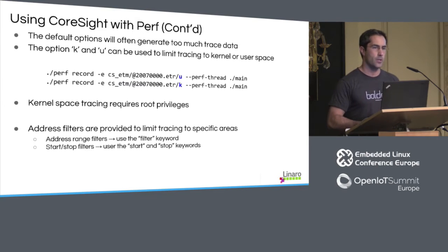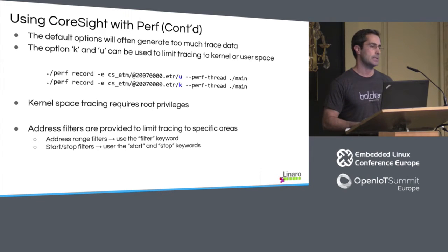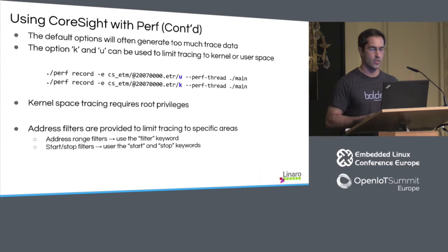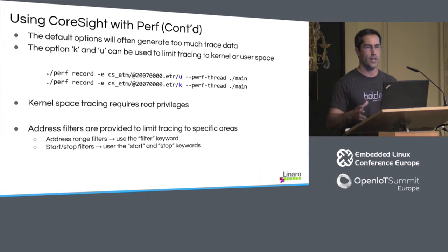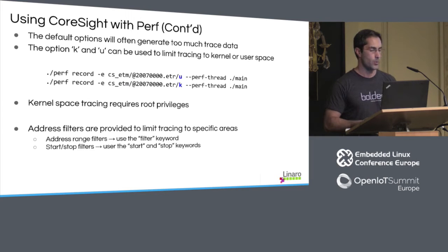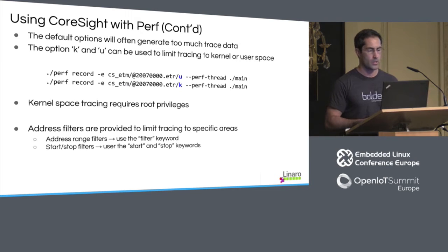When talking about Coresight and hardware-assisted tracing, we have to be mindful that it generates a massive amount of data, and it is definitely advisable to narrow down to only the areas of interest. There are a few ways to do this. The first is inherent to Perf: using the u or k option after the tracer specification will confine traces to either user space or kernel space. Even then there's a lot of information generated, which is why we've integrated with the filter framework already present in Perf. Two filters we've introduced are address range filters and start/stop filters.